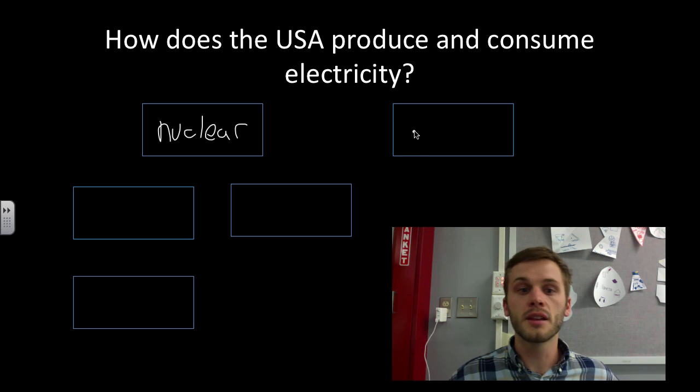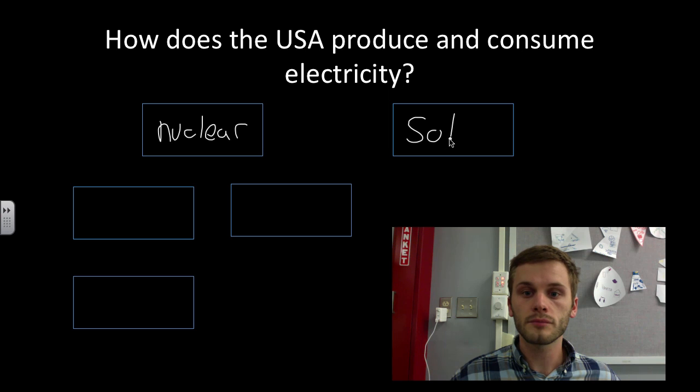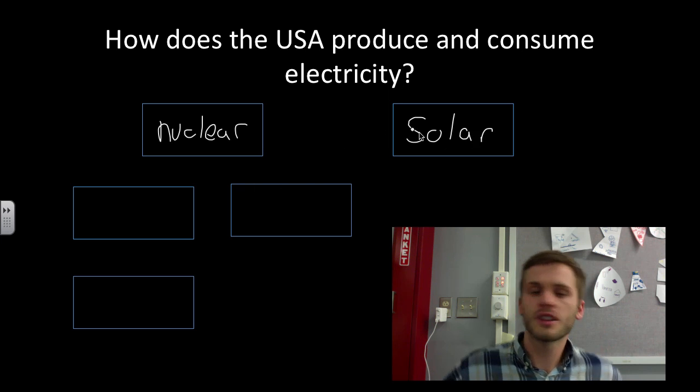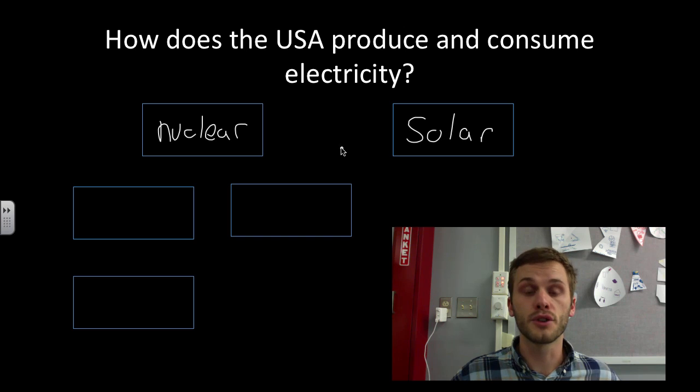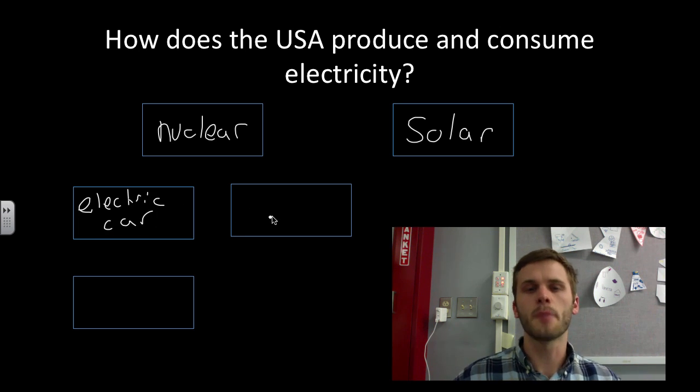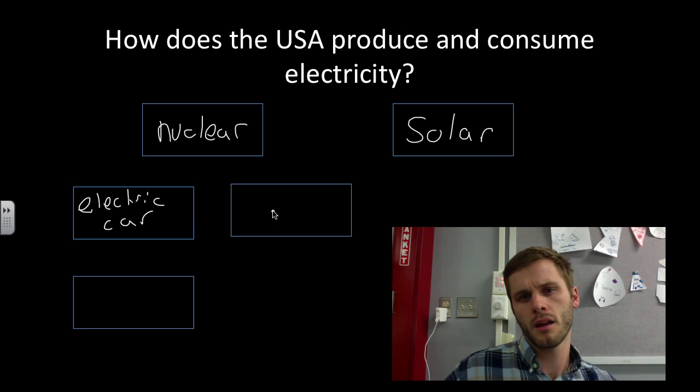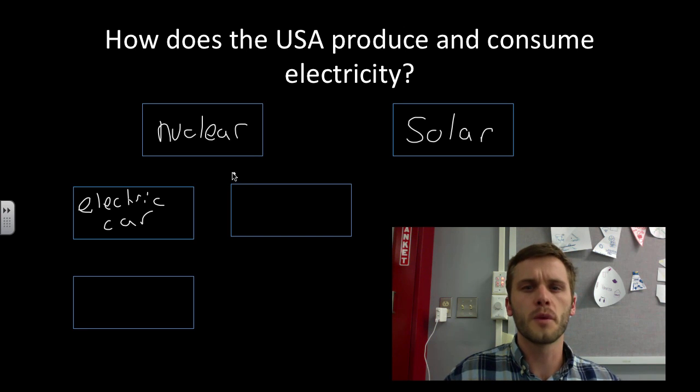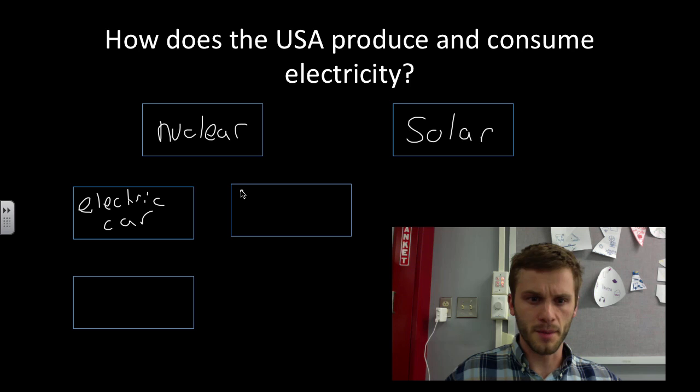Then different things consume that electricity. An example of something that might consume electricity from a nuclear power plant might be your electric car or your hybrid car. Another example of something that might consume electricity from a nuclear power plant would be something like a hairdryer.